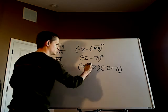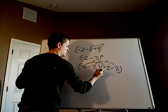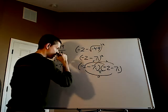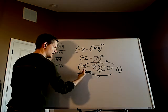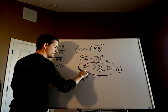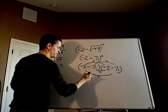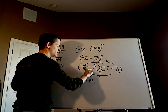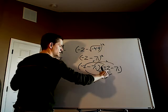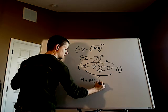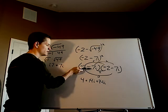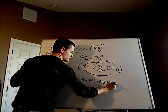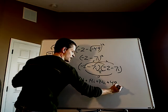Then what you want to do is FOIL — you have your first, your outer, your inner, and your last. Your first is negative 2 times negative 2, which gives you positive 4. The outer is negative 2 times negative 7i, which gives you plus 14i. The inner is negative 7i times negative 2, which gives you plus 14i. And then the last is negative 7i times negative 7i — negative times negative is positive, 7 times 7 is 49, and i times i gives you i squared.